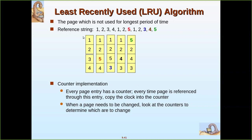Let us explain that with the given string. These are the pages. First, let us consider only four frames are available. The first time page one is referenced, it is a page fault since one is not there, so it will be loaded from secondary storage into a frame. Similarly, pages two, three, and four are all first-time attempts, so page faults definitely take place and they are transferred from secondary storage to main memory.